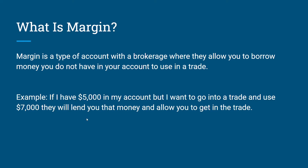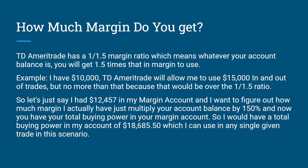If you have margin, they'll actually allow you to get into that trade. So how much margin do you get? With TD Ameritrade, they have a 1-to-1.5 margin ratio, which means whatever your account balance is, you'll get 1.5 times that in margin to use. So if I have a $10,000 account balance, TD Ameritrade will allow me to use $15,000 worth in and out of trades.